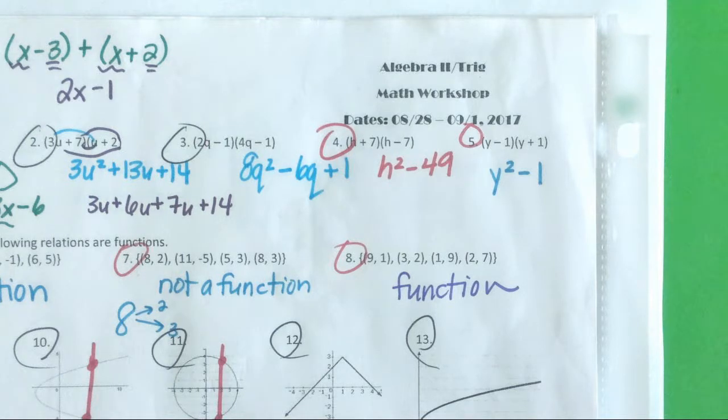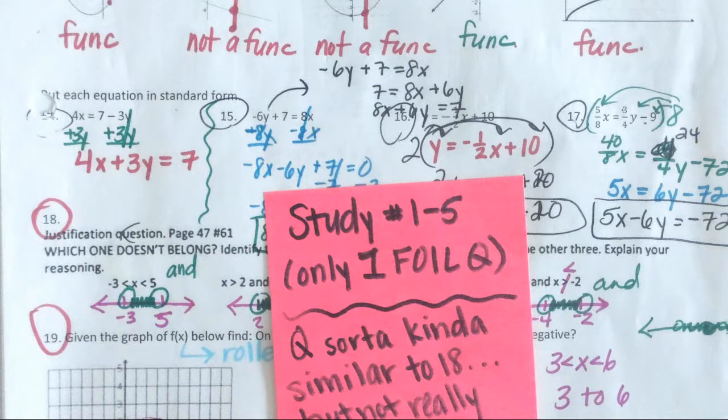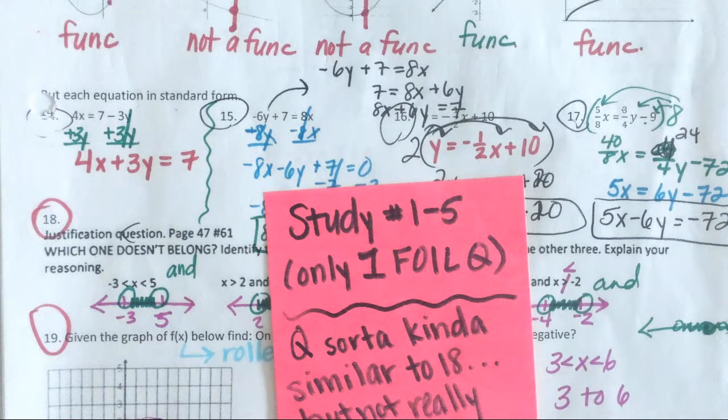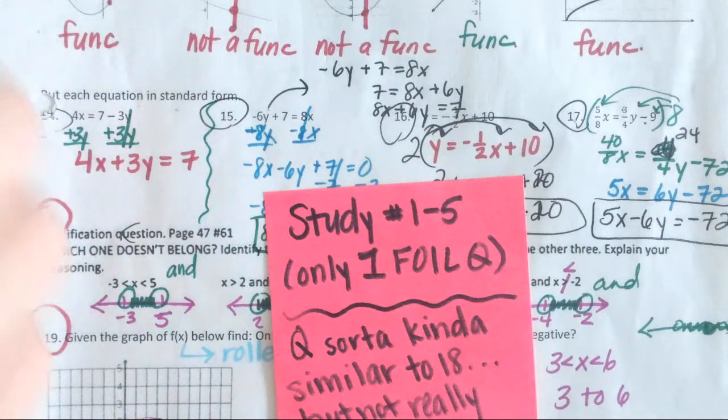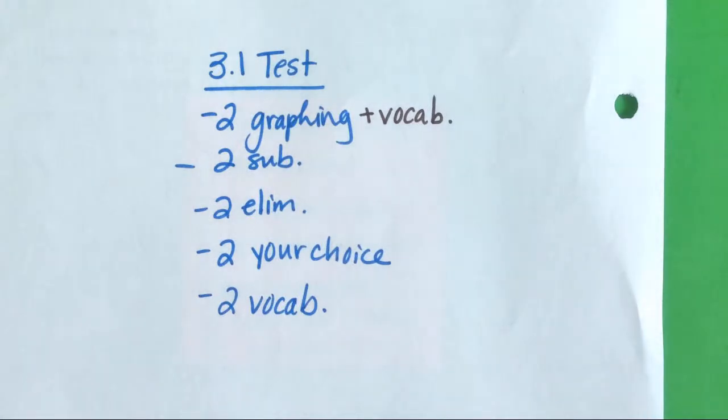I wrote myself a note. I would tell you I would study number 18, the justification question. There's a question sort of kind of similar to number 18, but not really. So what I need you to get from number 18 is the thought process you are using to figure out the answer. That same sort of thought process is needed on one problem from the math workshops.